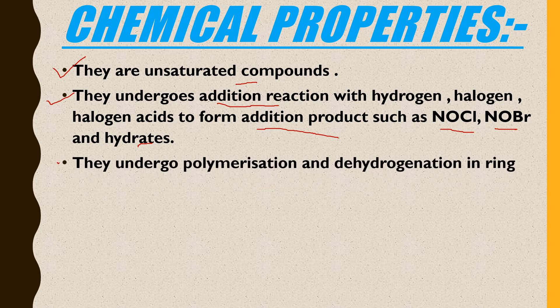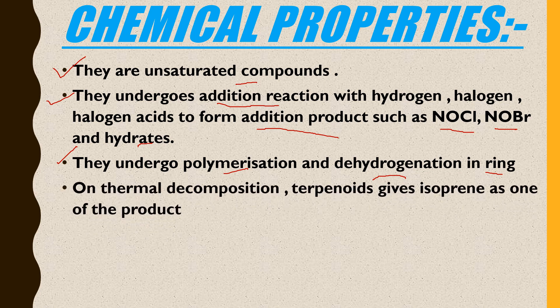Third, terpenoids undergo polymerization and dehydrogenation reactions. Polymerization means many terpenoid units link together via cross-links to form a network. Dehydrogenation means hydrogen is removed from within the terpenoids. Fourth, on thermal oxidation, the isoprene units — which are five-membered rings — evolve as products.